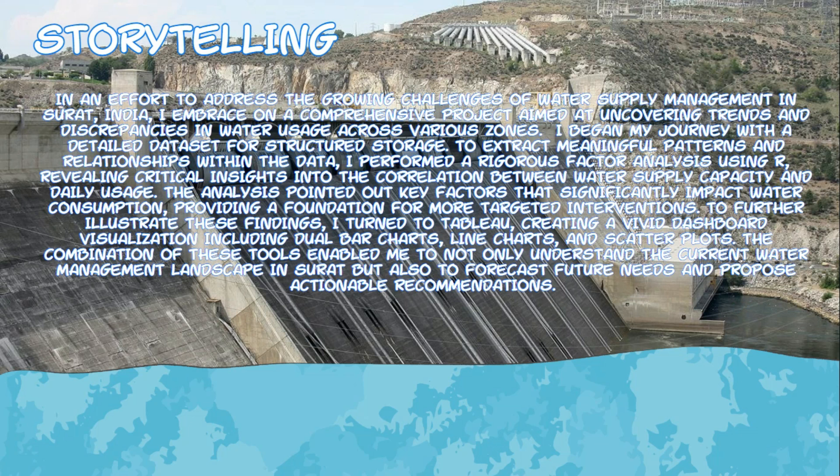In an effort to address the growing challenges of water supply management in Surat, India, I embarked on a comprehensive project aimed at uncovering trends and discrepancies in water usage across various zones. I began with a detailed data set to extract meaningful patterns and relationships. I performed a rigorous factor analysis using R, revealing critical insights into the correlations between water supply capacity and daily usage. I then turned to Tableau, creating a vivid dashboard visualization including dual bar charts, line charts, and scatter charts, enabling me to understand the current water management landscape and propose actionable recommendations.